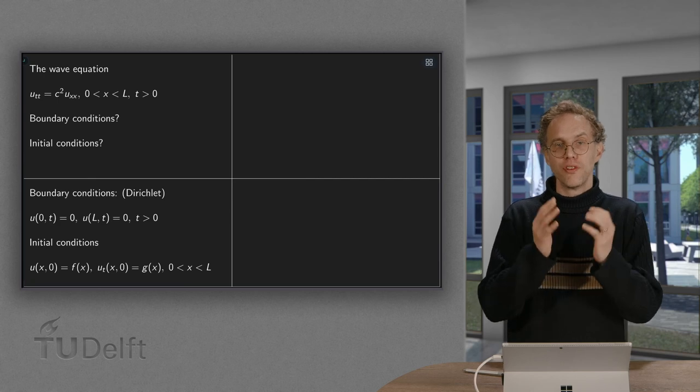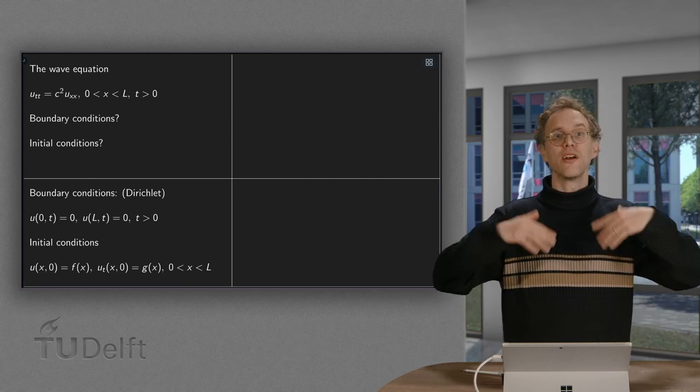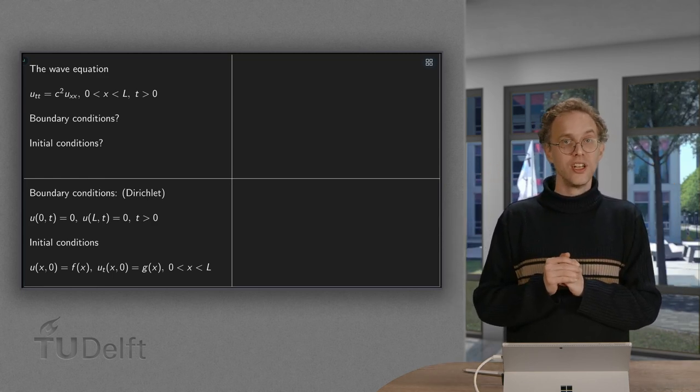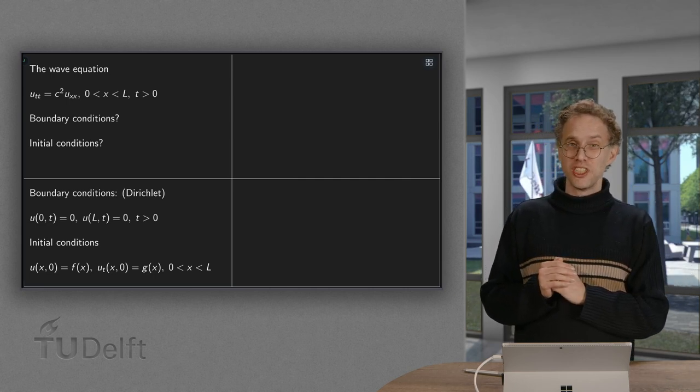So obvious boundary conditions for our first application would be Dirichlet boundary conditions. I have our second order space, so you'll need two boundary conditions for x, just as you needed for the heat equation.